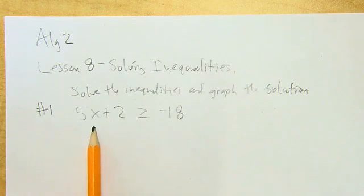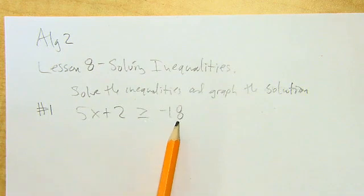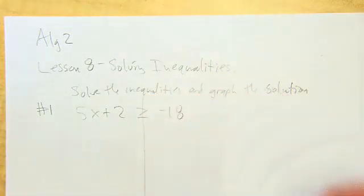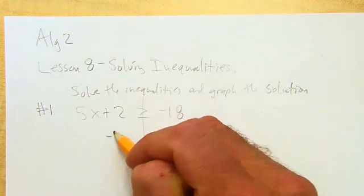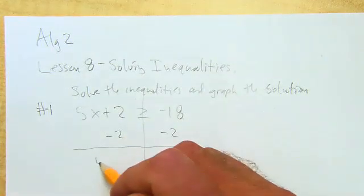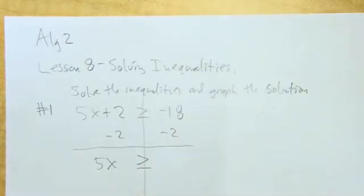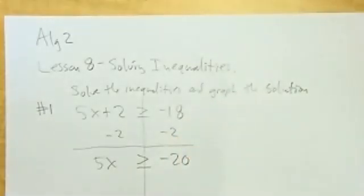All right, so a couple examples. Number one: 5x + 2 is greater than or equal to -18. We'll solve it just like an equation, bring everything down. Minus 2 on each side. 5x, bring this symbol down, and -18 minus 2 is -20. Okay, divide each side by 5.